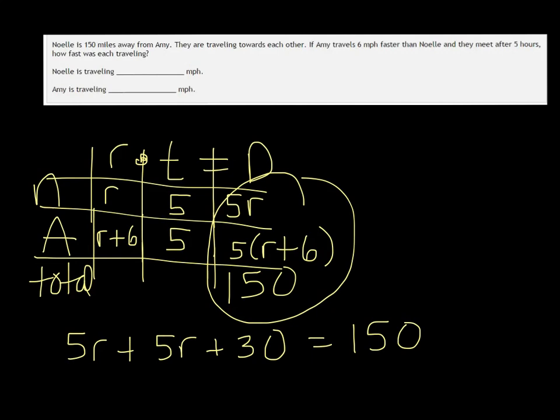And the reason that works is because these are both distances. And if you add up the distance Noelle went with the distance Amy went, then you should have a total of 150. So we combine like terms and we get 10R plus 30 equals 150.